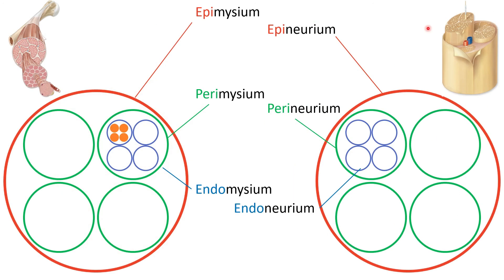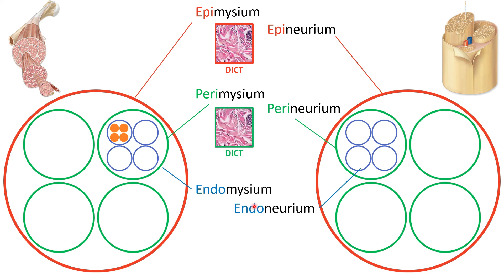So let's compare those two using the exact same drawing. We have our epis going around the entire muscle and the entire nerve. Our peris around the fascicle of the muscle and fascicle of the nerve. And our endos that go around the muscle cell and the nerve cell. Both the epimysium and the epineurium are composed of dense irregular connective tissue. The perimysium and perineurium are also dense irregular connective tissue. And the endomysium and endoneurium are areolar connective tissue. If you just learn this pattern, you'll be able to apply the terminology and connective tissue pattern to both the muscle and the nerve.